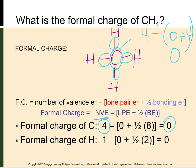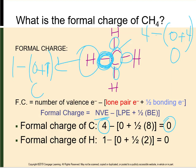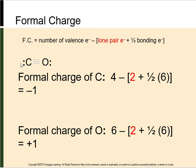Now let's calculate the formal charge for the hydrogens — they're all the same. Hydrogen has 1 valence electron, minus 0 lone pairs, plus one-half of 2 bonded electrons, which is 1. So 1 minus 1 is 0; there is a zero formal charge on hydrogen as well. Since everything is neutral here, positive or negative ions are not going to be attracted to any part of this compound. Now let's look at the formal charge of carbon monoxide.